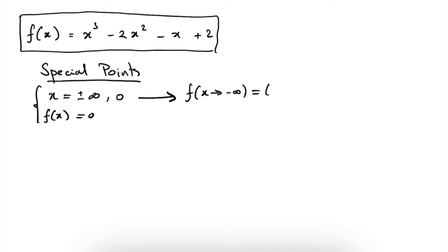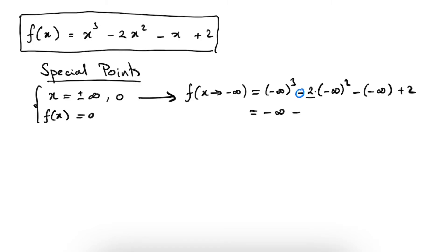We can just fill in x going to minus infinity: minus infinity to the power of 3 minus 2 times minus infinity squared minus minus infinity plus 2. A minus sign to the power of 3 will again be a minus sign, so we get minus infinity. But minus minus infinity squared gives minus infinity, and then minus minus infinity gives plus infinity. So we have minus infinity plus infinity, which doesn't give us a conclusive answer. We have to leave it for now.